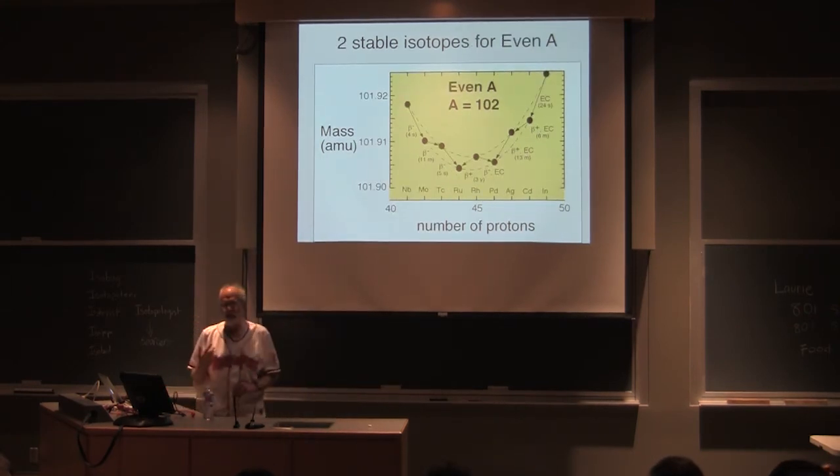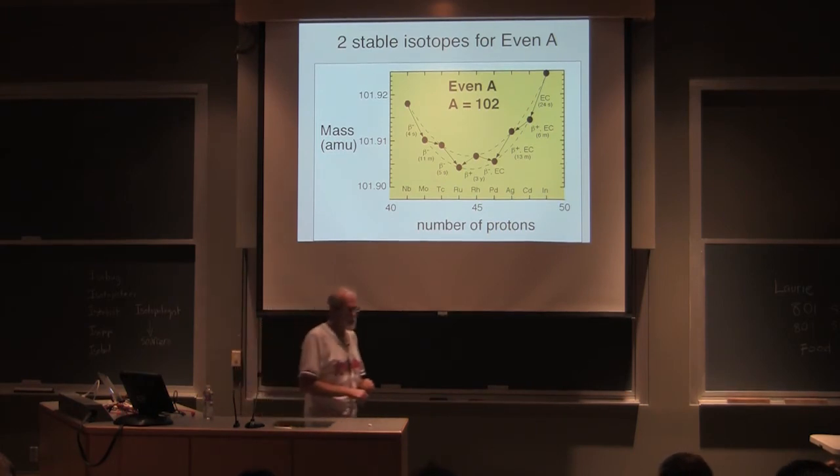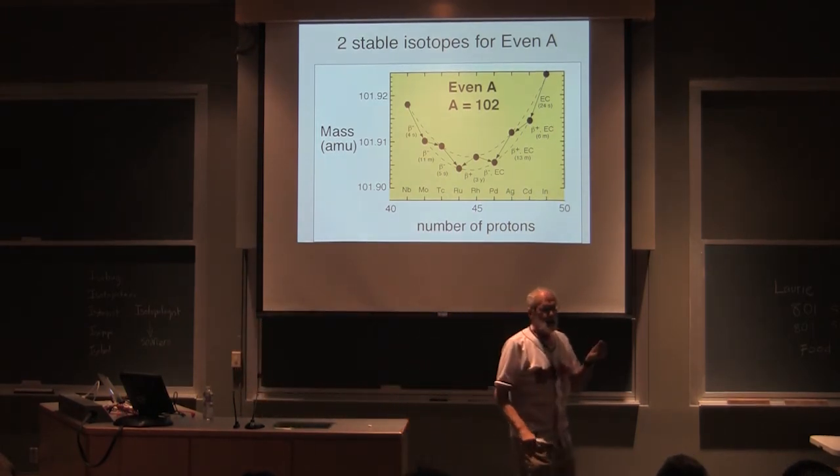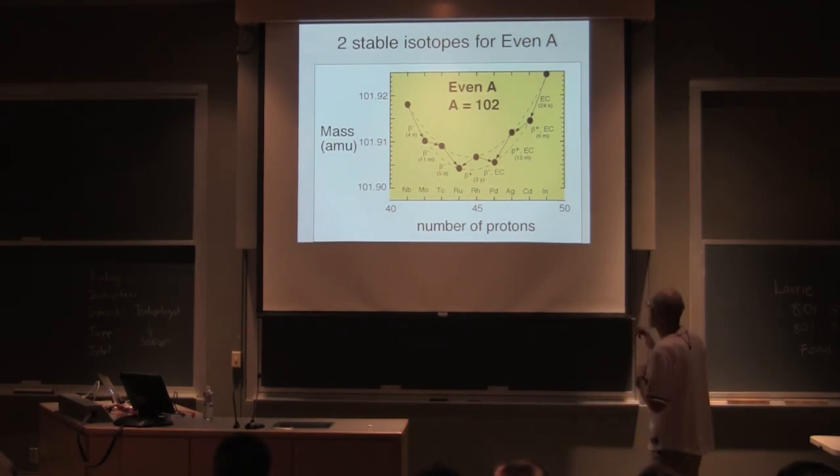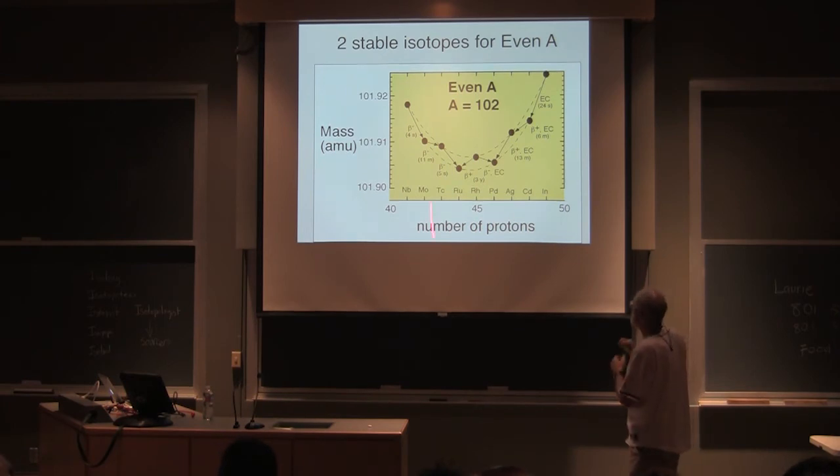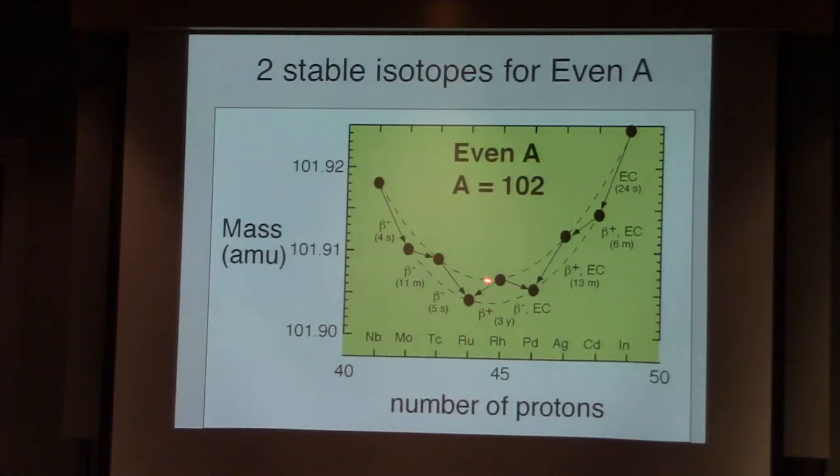So there's only one stable isotope in all odd A configurations. Only one stable isotope, because there's only one bottom to the mass parabola. If we look at an even A, that means we've got paired protons and paired neutrons or paired or anti-paired. What we find is we have two mass parabolas. This inner mass parabola is odd-odd. This outer mass parabola is even-even. So even-even, odd-odd. And we bounce from parabola to parabola.